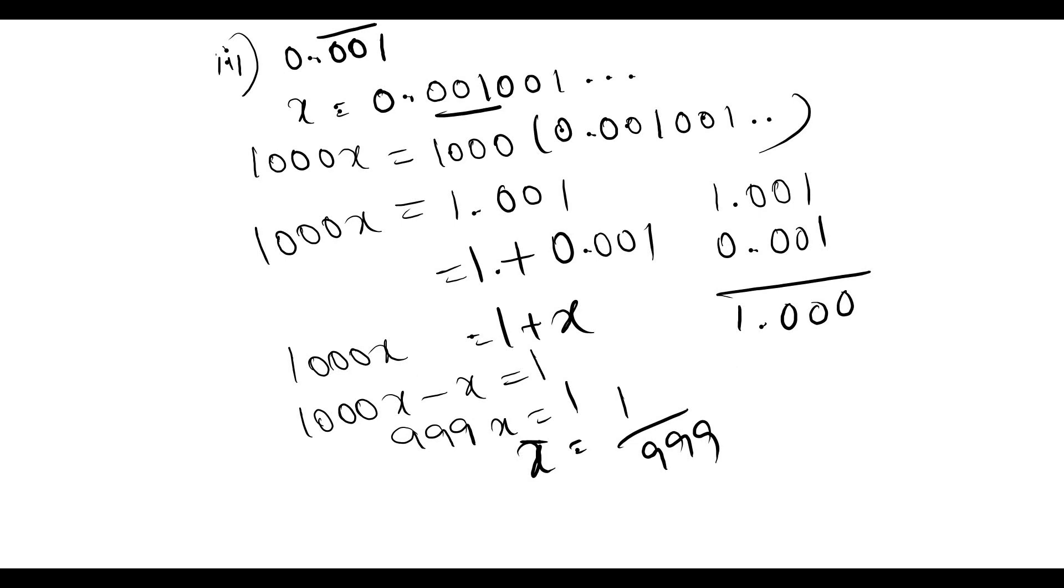Third problem is 0.001 bar. Here 001 is repeated after the decimal point. Since 3 digits are repeated, you have to consider 3 zeros, that is 1000.